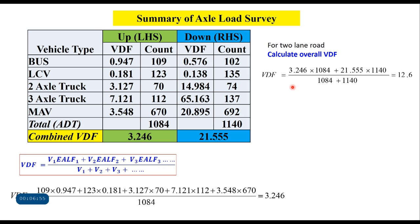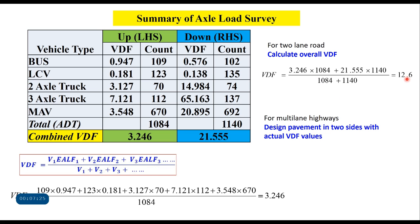If it is a two-lane road, we calculate the overall vehicle damage factor as a weighted average: (3.246 × 1084 + 21.555 × 1140) / total sample size = 12.6. This is the VDF for a two-lane road. If it is a multi-lane highway, then we should design the pavement in two directions using the actual VDF values for each direction.